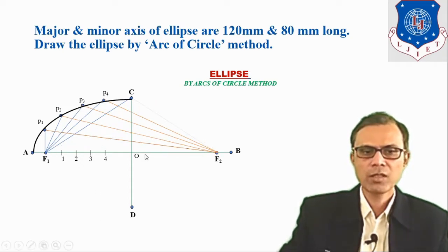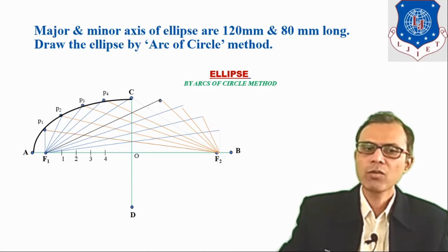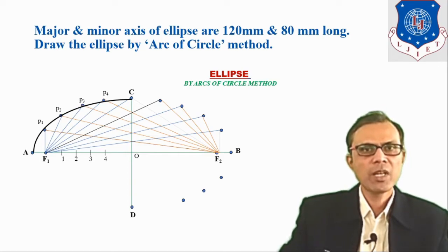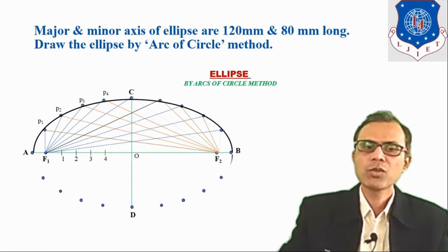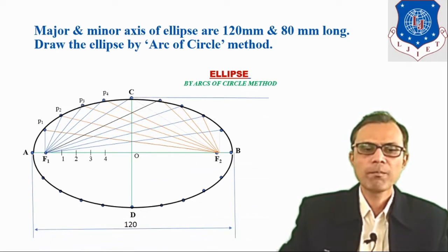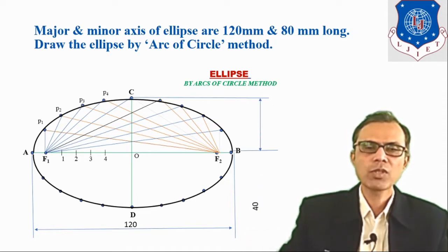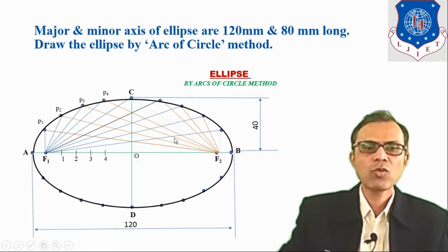The same procedure is to be repeated for the other quadrant parts. Join all the intersecting points with a smooth free-hand curve. Write down the dimensions: major axis 120 mm, minor axis 80 mm, and half of the minor axis OC equals 40 mm. You can also write the total dimension CD equals 80 mm. That is the complete procedure to draw the ellipse by the arc of circle method.